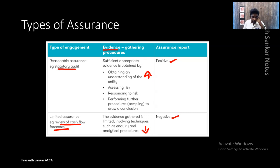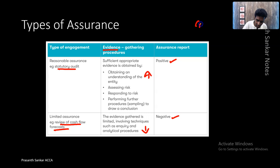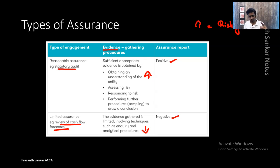The higher the degree of assurance you give, the higher risk you have. The more assurance you give equals more risk, because people are following your footsteps. When you give a reasonable assurance, there is high risk involved. So you need to be careful before you give an assurance.